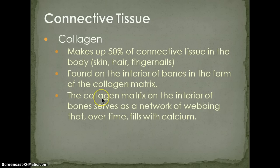The collagen matrix of the interior of the bone over time fills with calcium. That's why we use veal bones for making demi — they have a higher concentration of collagen, which lends to more viscosity and a better stock. Beef bones are more solid and not as good for making a very thick stock.